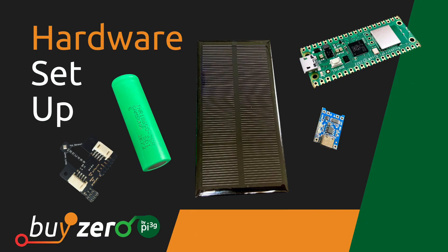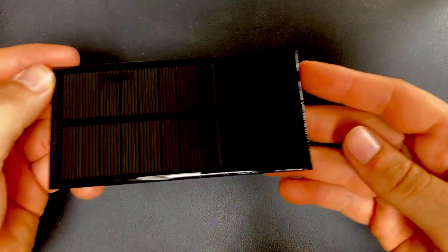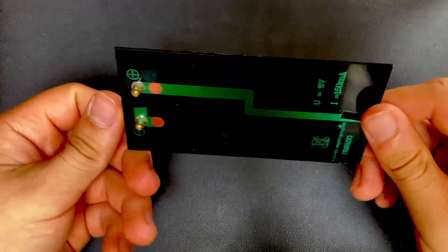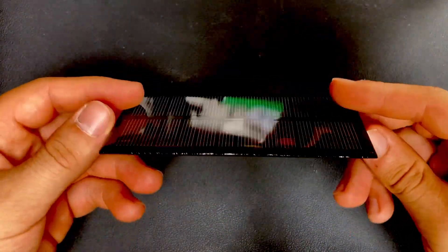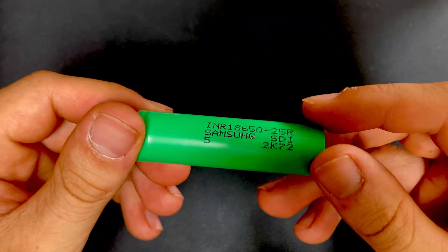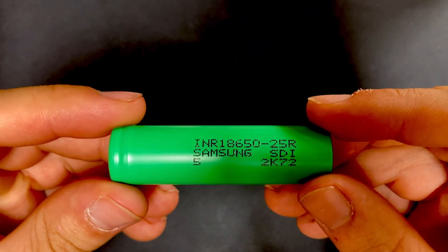Let's first check out the required components and how to wire everything up. The first component is the solar module. You should use one that outputs at least 6 volts and 150 milliamps. The next component is a lithium-ion battery of type 18650 that outputs 3.7 volts.